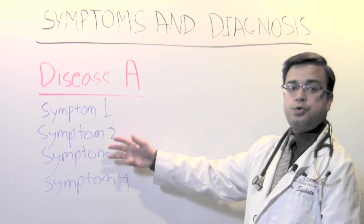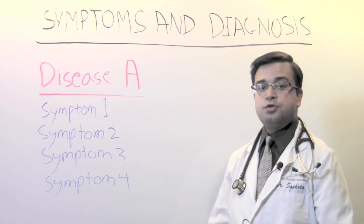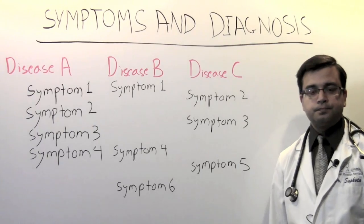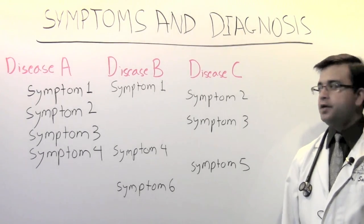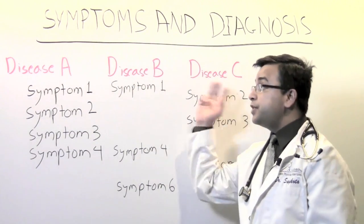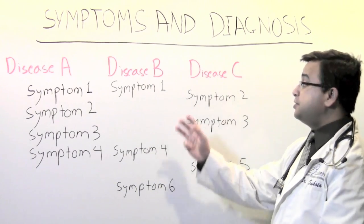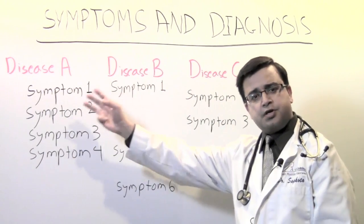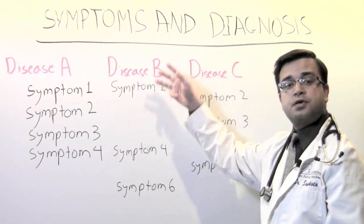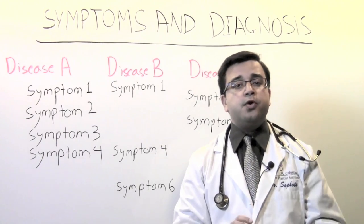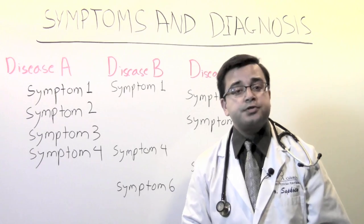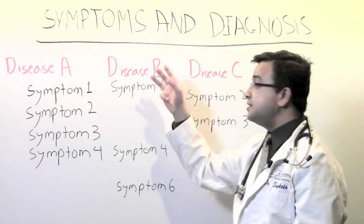What if you only have two out of the four symptoms? Do you then have a 50% chance of having disease A? Now, let's look at the bigger picture. We have three diseases to compare. Each disease shares some common symptoms with the others but has a unique set of symptoms. If someone has symptom 1 and symptom 4, does that person have disease A or disease B?